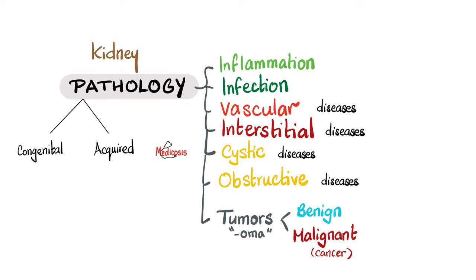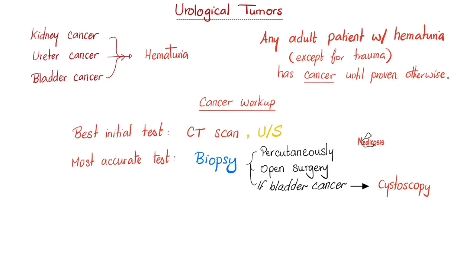Kidney diseases could be diseases of inflammation, diseases of infection, diseases of the vessels, diseases of the kidney interstitium, cystic diseases, and obstructive disease. We talked about all of these before. Today, we're talking about an OMA — a malignant OMA — which is renal cell carcinoma. It's a cancer.